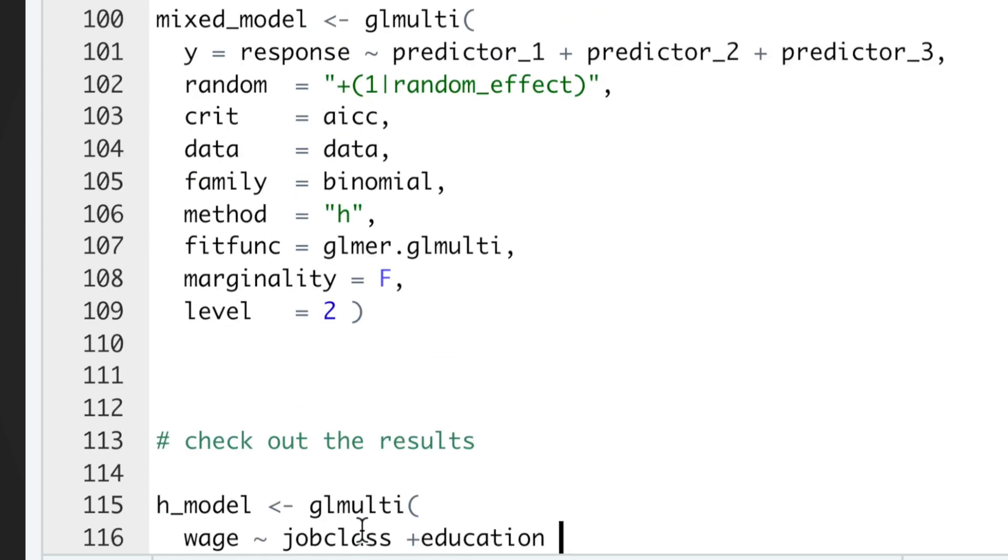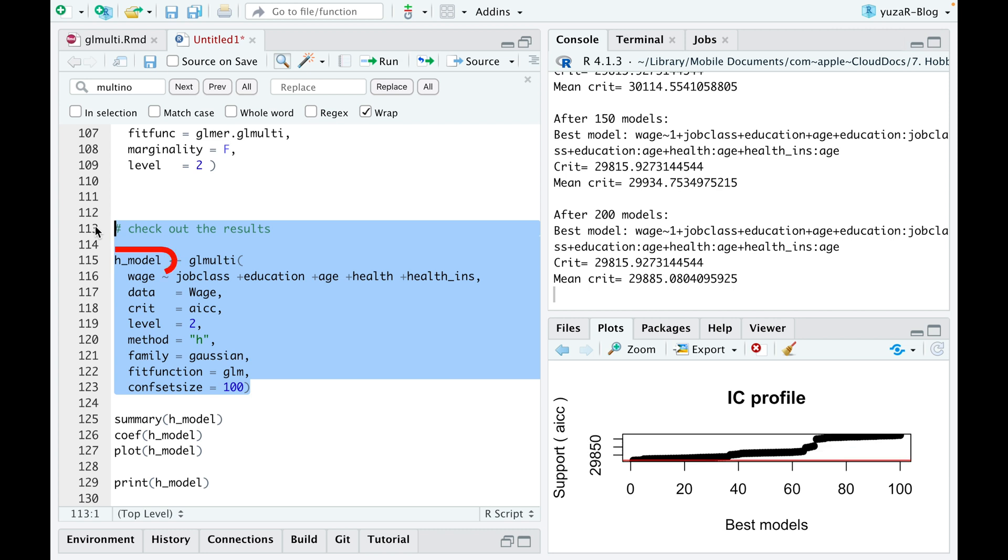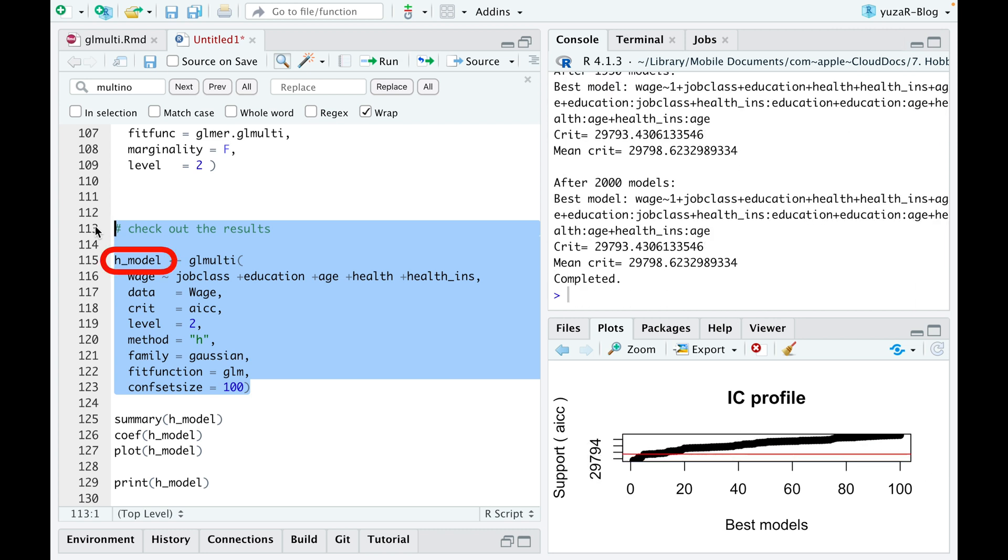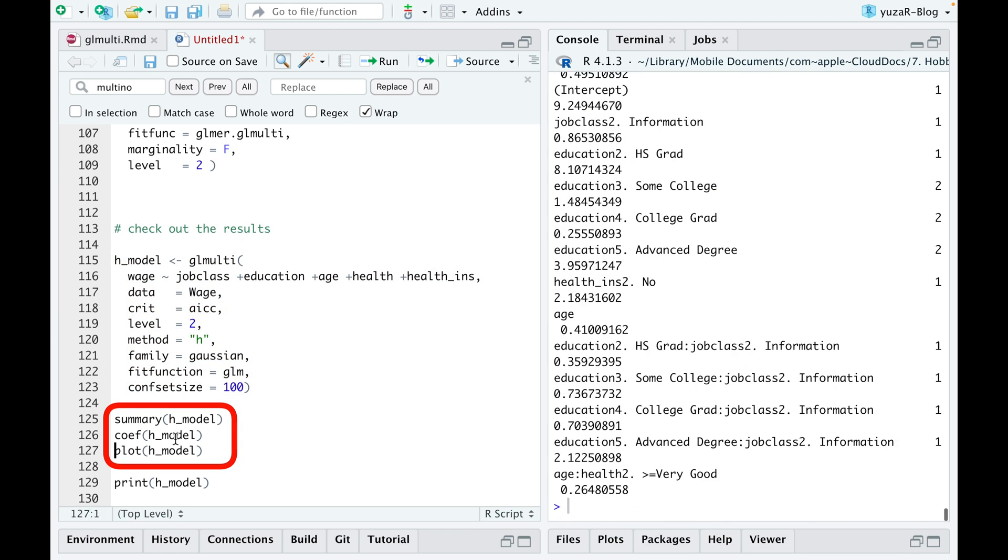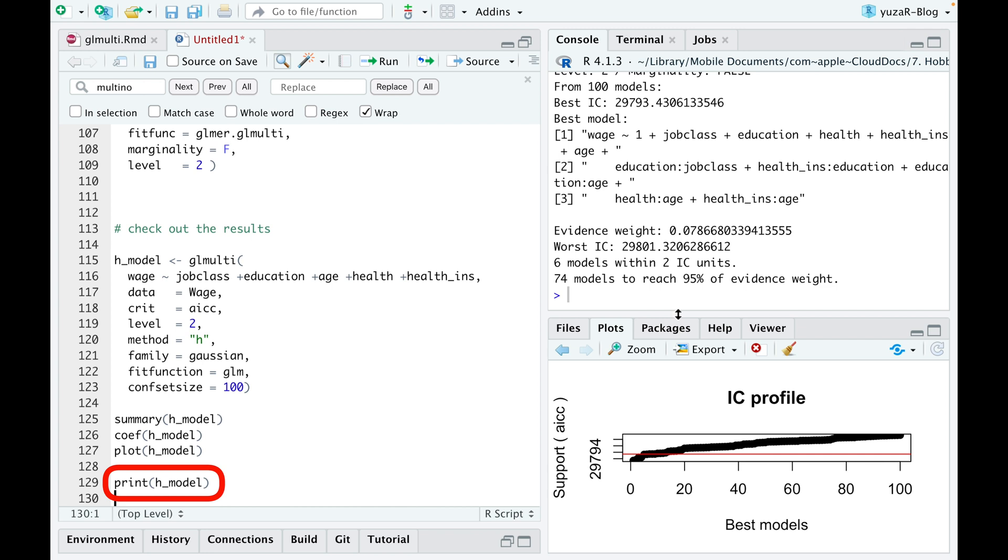Now, let's have a look at the results of our best model and interpret them. The output of glmulti analysis is an object containing the confident set of models. Standard R-regression functions like summary, coef, and plot can all be used to make a multi-modal inference.